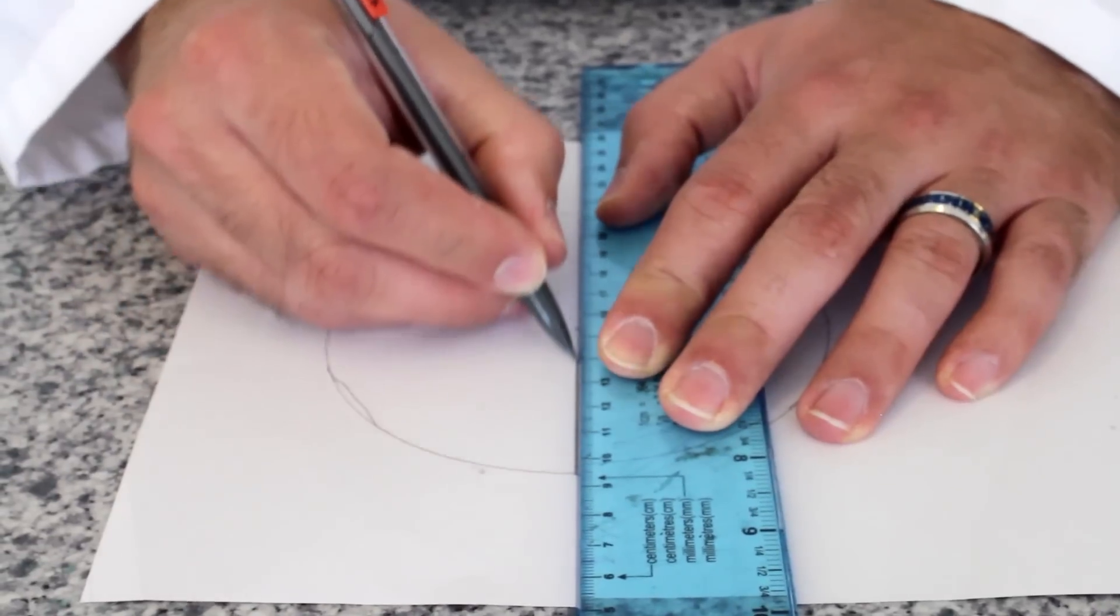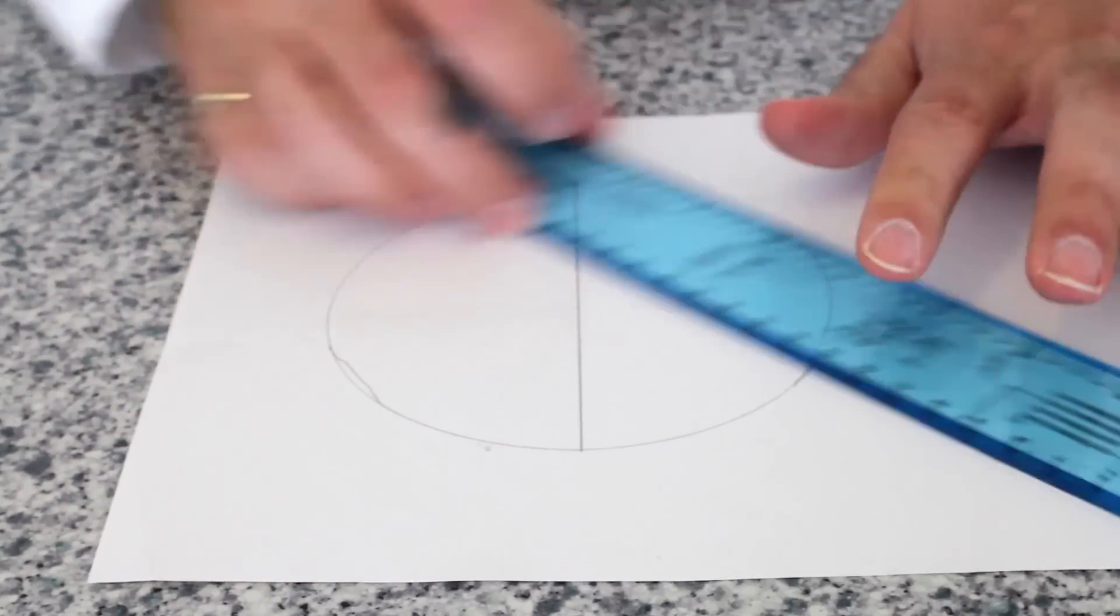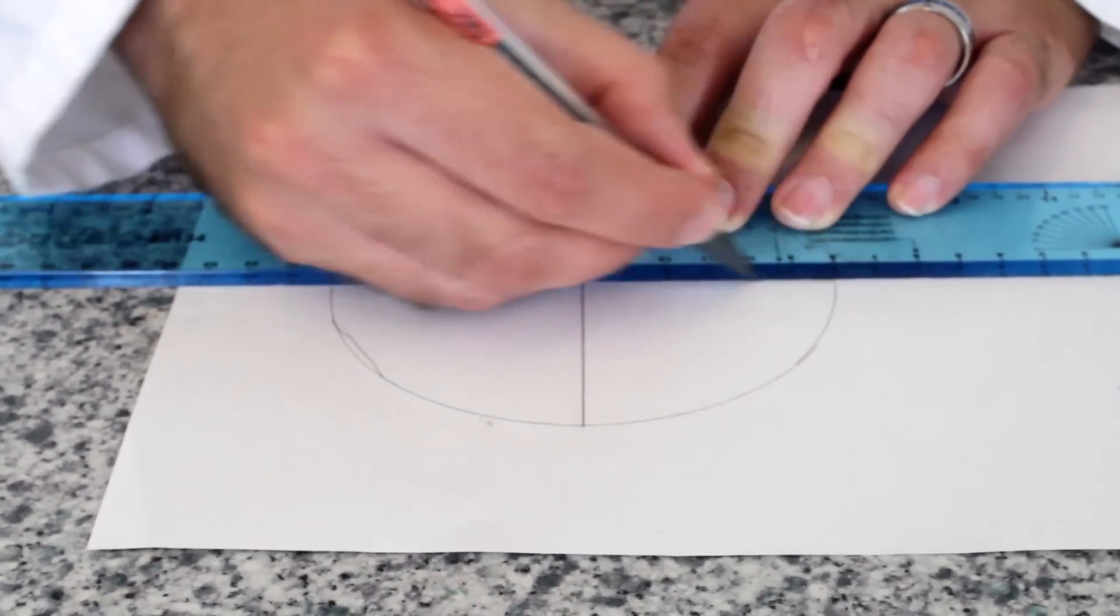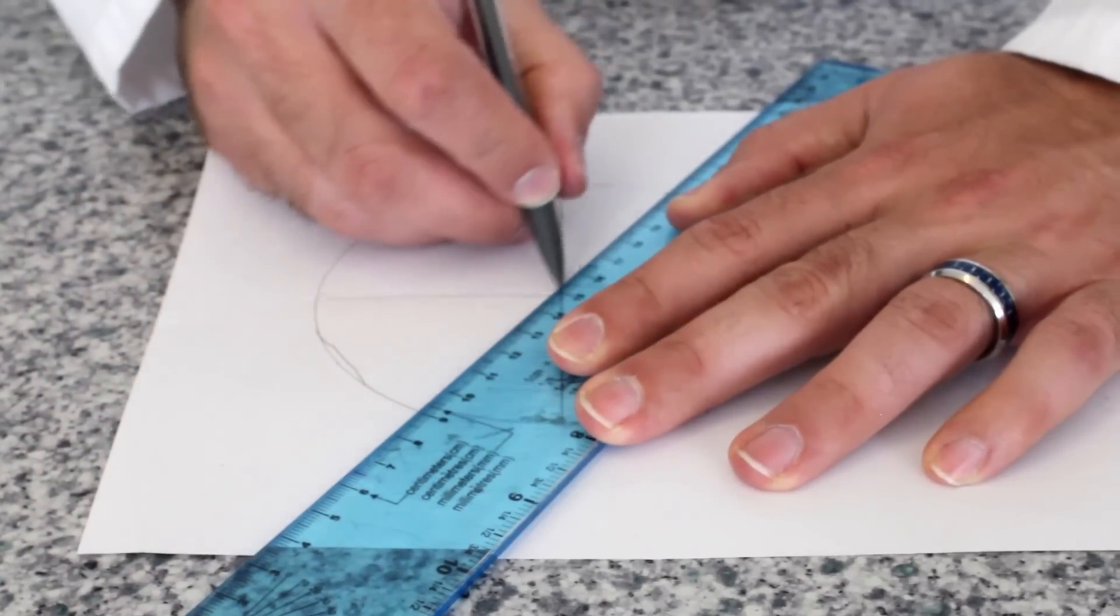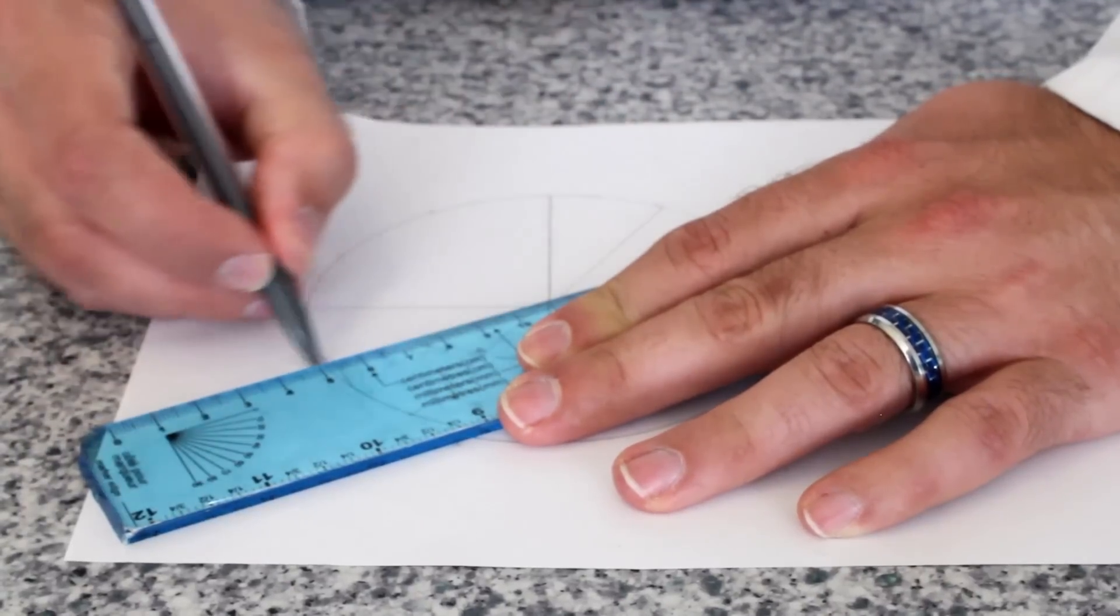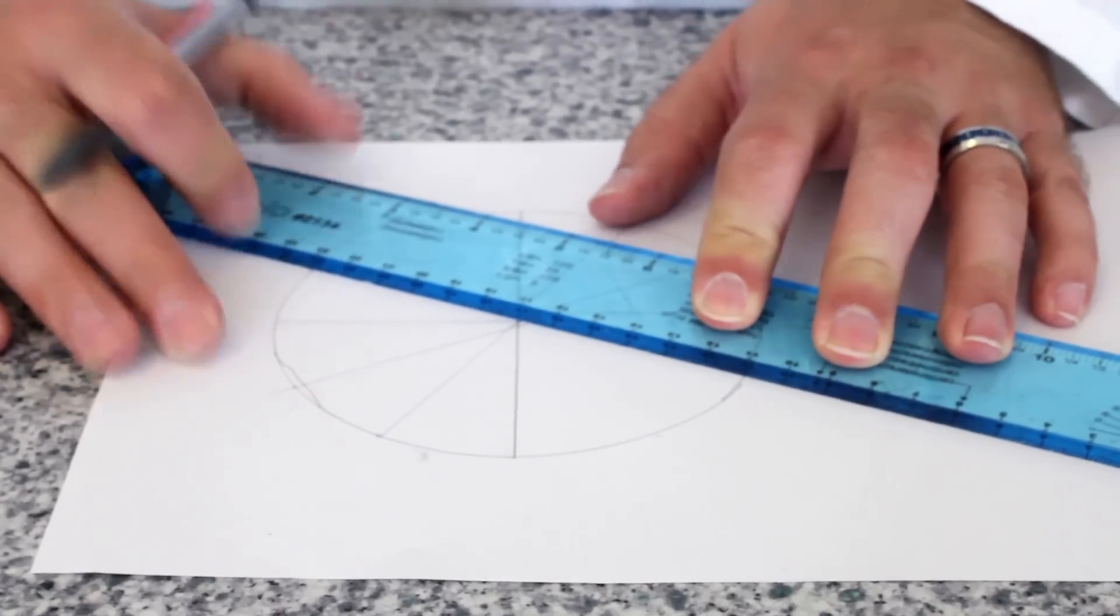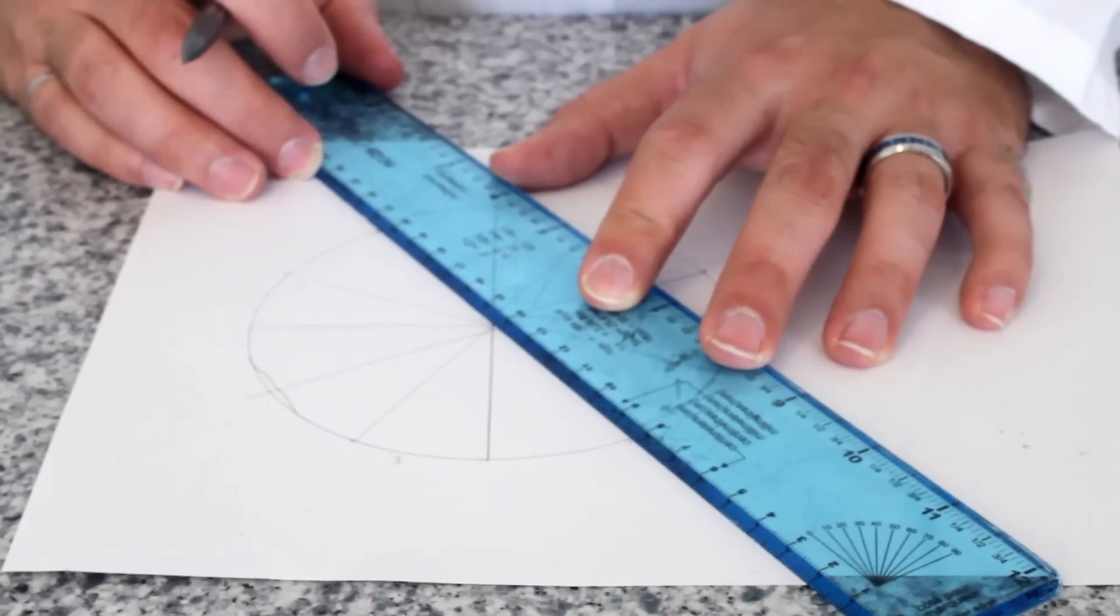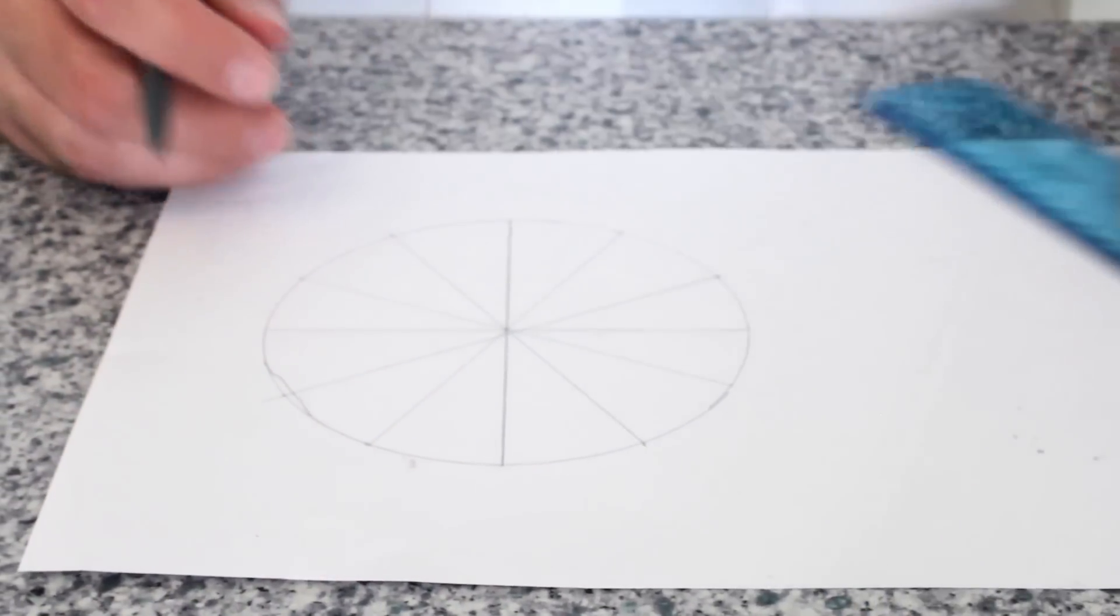Next, we have to divide our wheel into sections. We'll start by dividing it into quarters. So a line from top to bottom and from left to right. Now we can divide up the rest of the wheel like the hours on a clock. We go from 1 to 7, 2 to 8, 4 to 10, and 5 to 11.